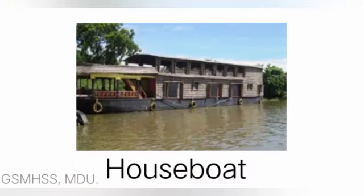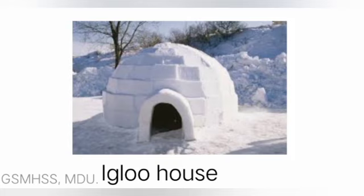Houseboats are found mostly in Kerala or Kashmir. These houses can move on water. Igloo houses are found in places with heavy snowfall and are made up of ice.